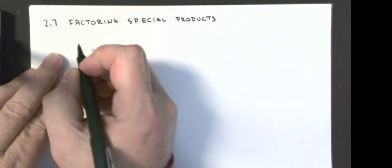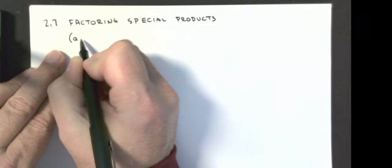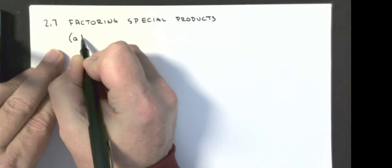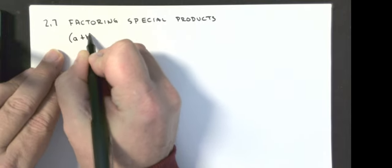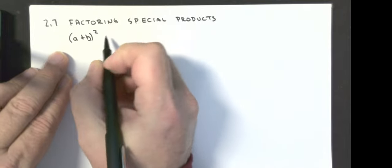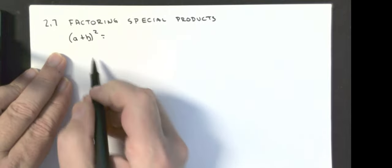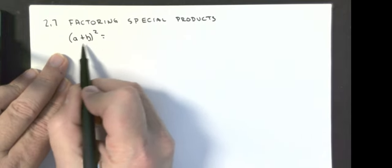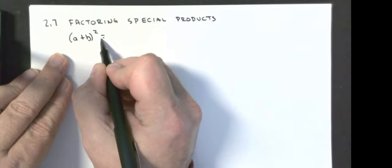Our next section in chapter 2 is factoring special products. What they mean by special products — we're going to be able to factor perfect squares.